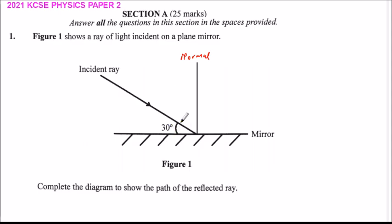Because this angle is 30, it means this angle here is 60 degrees. And we have said that the angle of incidence is equal to the angle of reflection.